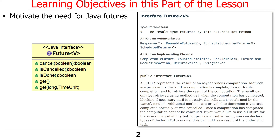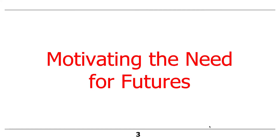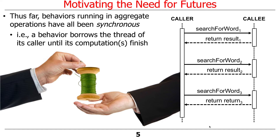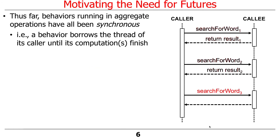We're going to talk about how to motivate the need for Java futures — what is a future and why do you need one? If you think about everything we've covered so far, all the operations in the context of streams and parallel streams have been synchronous. That means the thread that invokes an operation is the same one to carry it out. It's a call-response model: you make a call, you wait, you get a result.